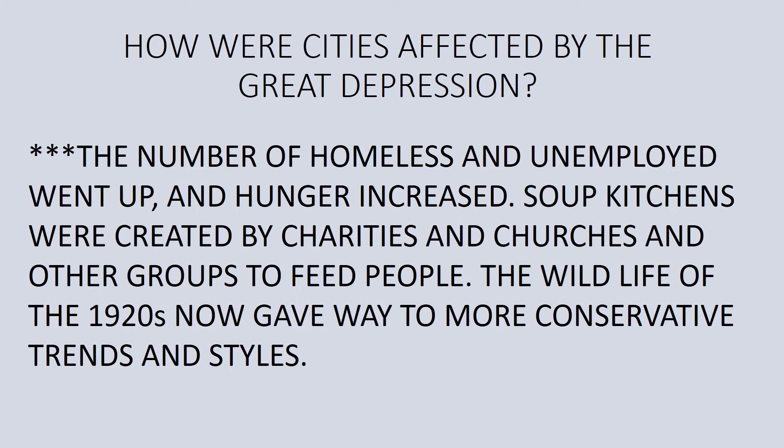How were cities affected? The number of homeless and unemployed went up as people lost jobs and couldn't make their house payments. Hunger increased as well. Soup kitchens were created by charities, churches, and other groups to give people free meals — usually just a little soup and a piece of bread, but it was food in the stomach. People would say you were 'on the bread line.' The wilder lifestyle of the 1920s gave way to a much more conservative way of life in the 1930s — in style of dress and everyday living. Cities started to have a different feel and look during the 1930s.